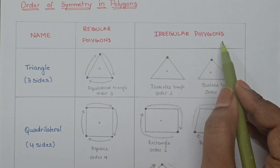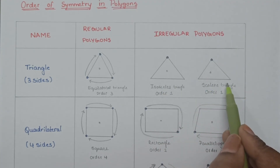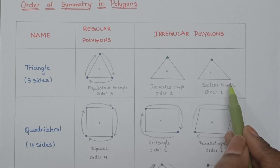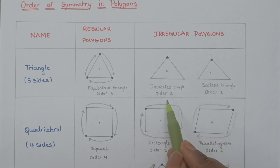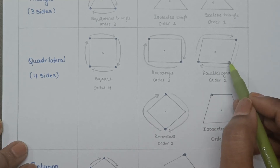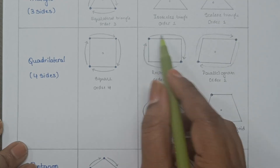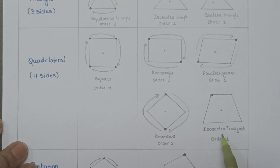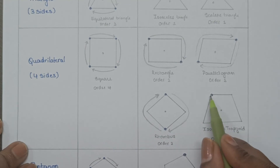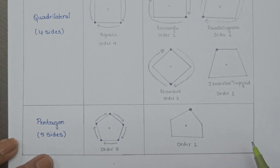Irregular polygons may or may not exhibit symmetry. Isosceles triangle and scalene triangle have no rotational symmetry — they are identical only at 360 degrees, so order equals 1. Rectangle, rhombus, and parallelogram match their original position twice during a full rotation, so order equals 2. Isosceles trapezoid matches its original position only once during a full turn, so order equals 1. Irregular polygon matches at 360 degrees, so order equals 1.